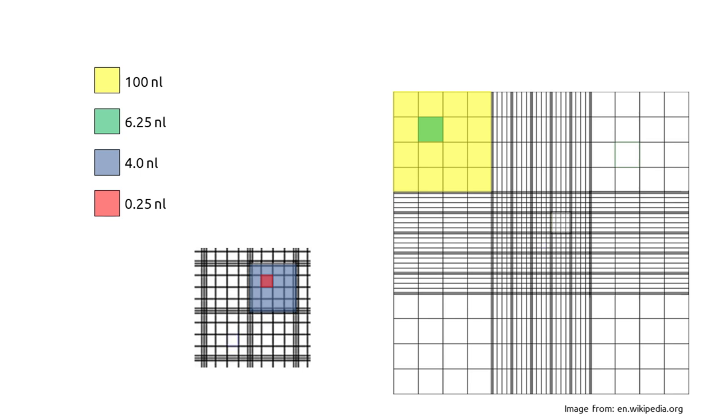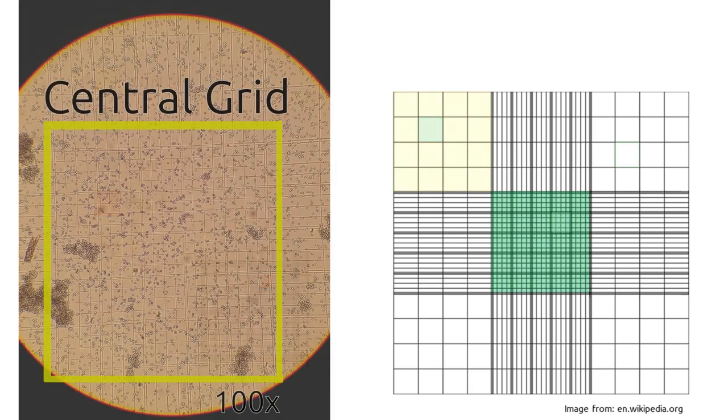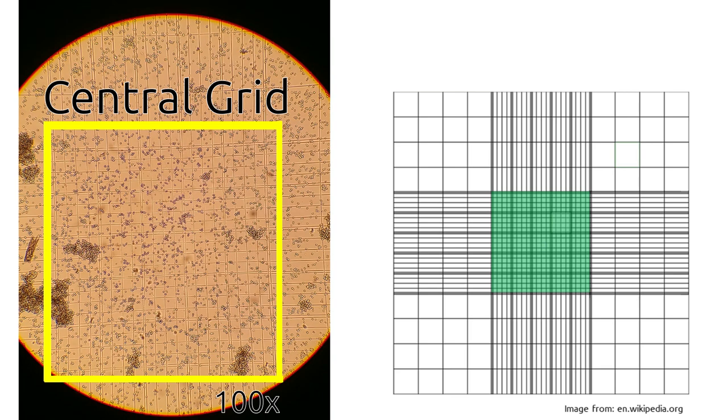The standard hemocytometer can be thought to have two distinct regions. The first region in the middle is a one millimeter by one millimeter area with a high density grid. In most cases this grid is 0.5 by 0.5 millimeters in size. This is ideal for counting dense suspensions as that higher density grid makes it easier to keep track of which cells you have counted within each grid space.